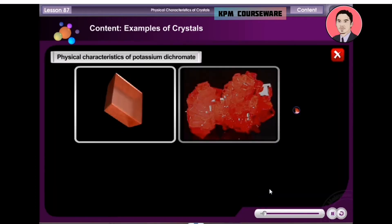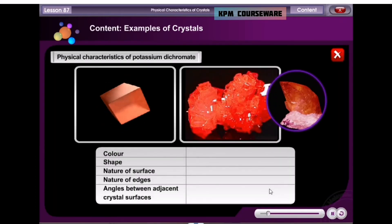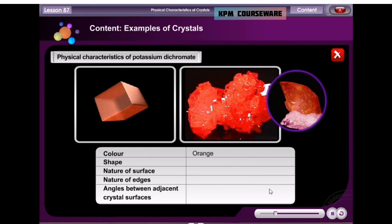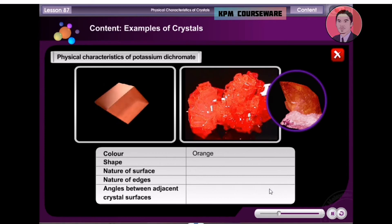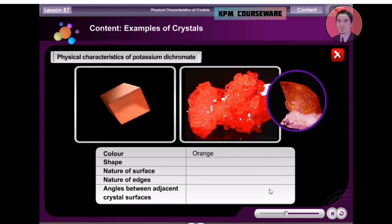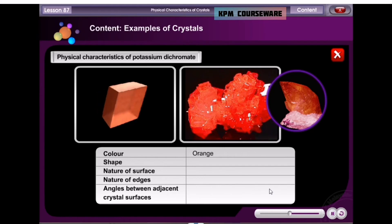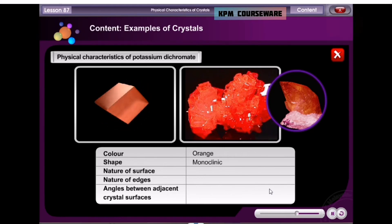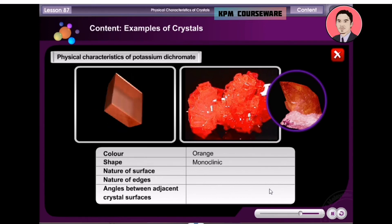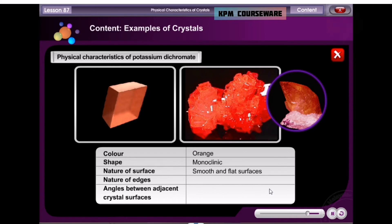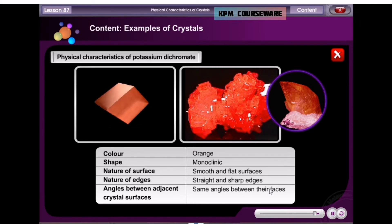These are potassium dichromate crystals. This mass of orange crystalline solid is made up of many crystals. Let us take a closer look at the crystals. The shape of potassium dichromate crystals is monoclinic. They have smooth and flat surfaces, straight and sharp edges and sharp corners.